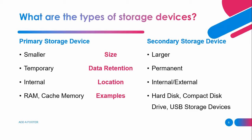The types of storage devices are primary storage device and secondary storage device. When it comes to size, primary storage device is smaller while the secondary storage device is larger. The data retention for primary storage device is temporary; the secondary storage device is permanent. The location for primary storage device is internal, while the secondary storage device is internal or external.